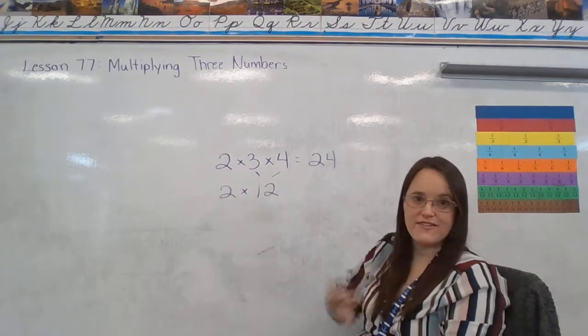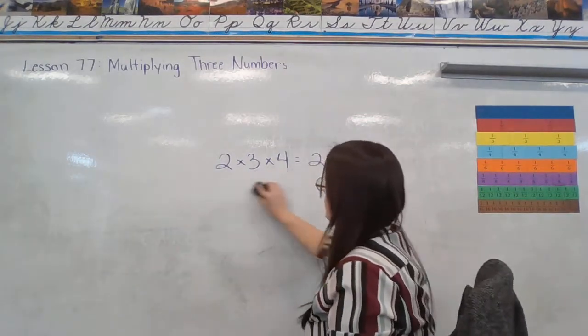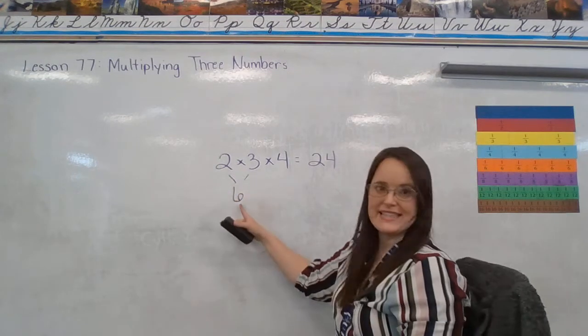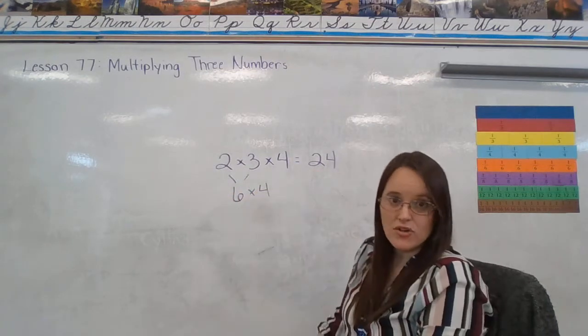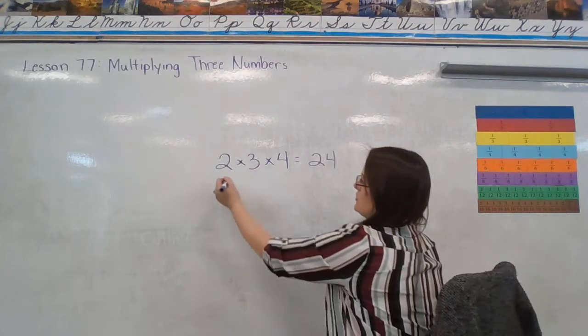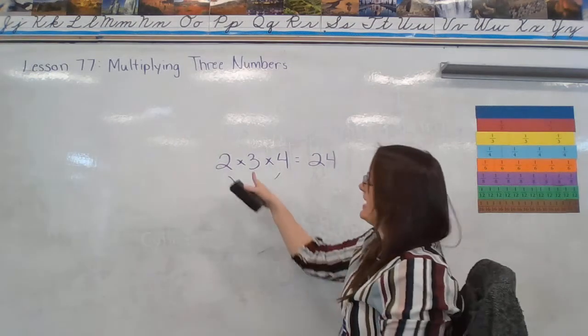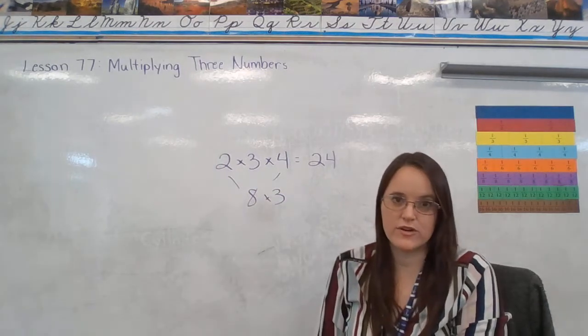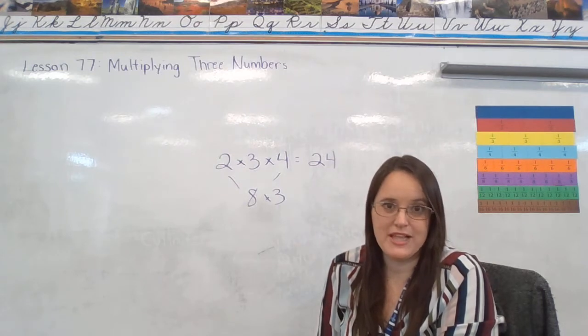So could I have gotten that answer if I hadn't chosen to multiply 3 and 4 first? Absolutely. What happens if I do 2 times 3 first? I get 6 and then 6 times 4 is also 24. Or I could have chosen to do 2 times 4 first which would give me 8 and then 8 times 3 is also 24.